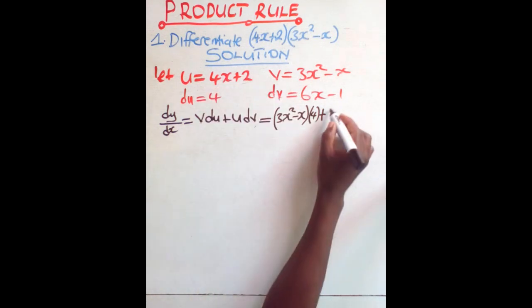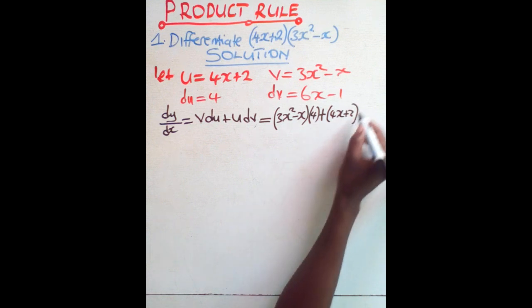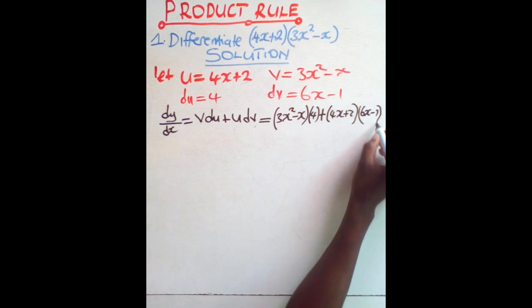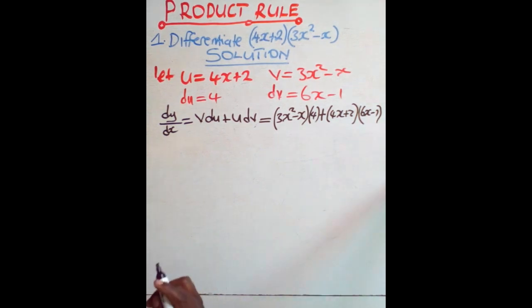So 4x plus 2, then times dv, 6x minus 1. After doing that, I think you can now open the brackets.